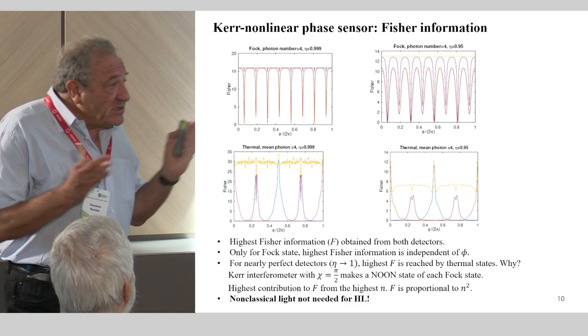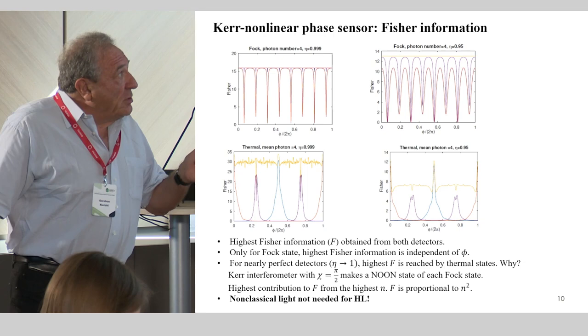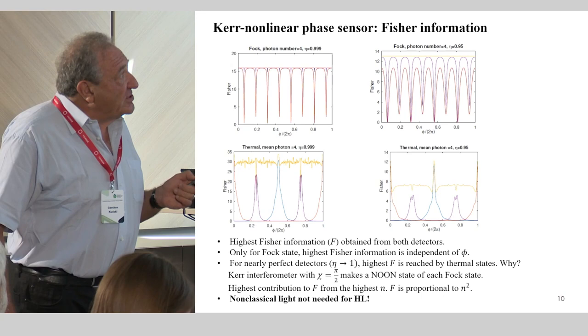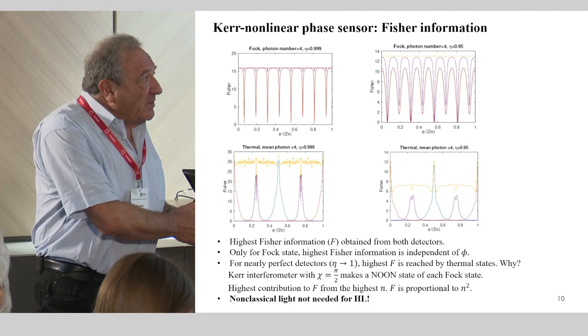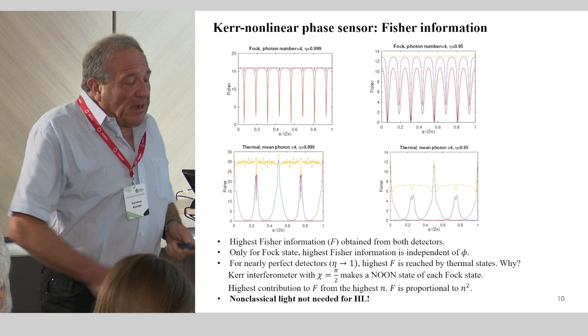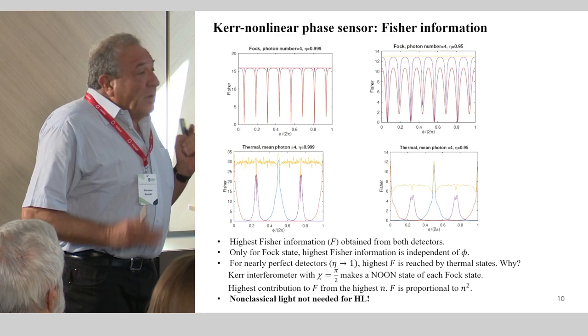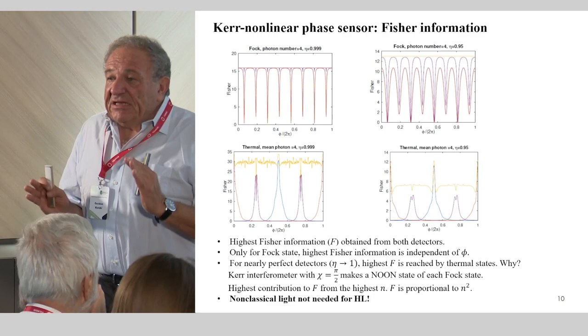What is even more curious is that if you calculate the quantum Fisher information, the maximum information you get on the phase, then what you can see is that for nearly perfect detectors, not only does a Fock state give you good phase discrimination, but the thermal input gives you twice as much information as a Fock state. Here you see 30 instead of 50. This is unexpected. If you go to lower detection efficiencies, then the situation reverses. The Fock state gives you more information than thermal, but thermal is still comparable. It still is below the shot noise limit.